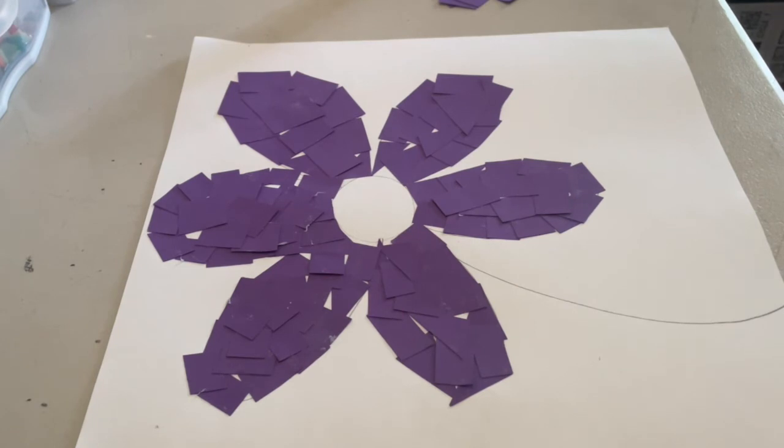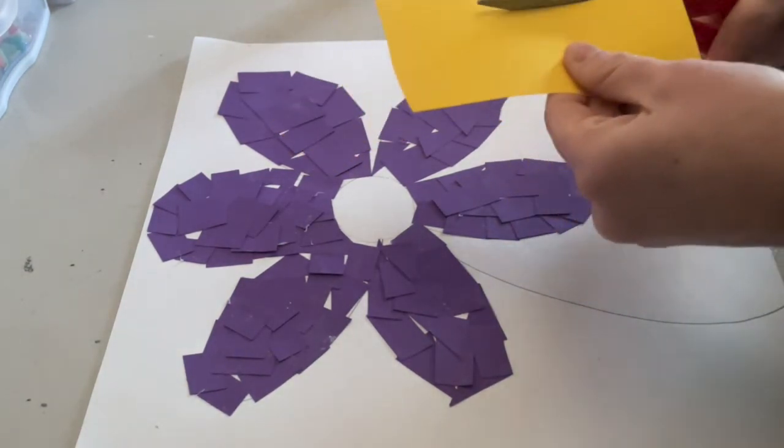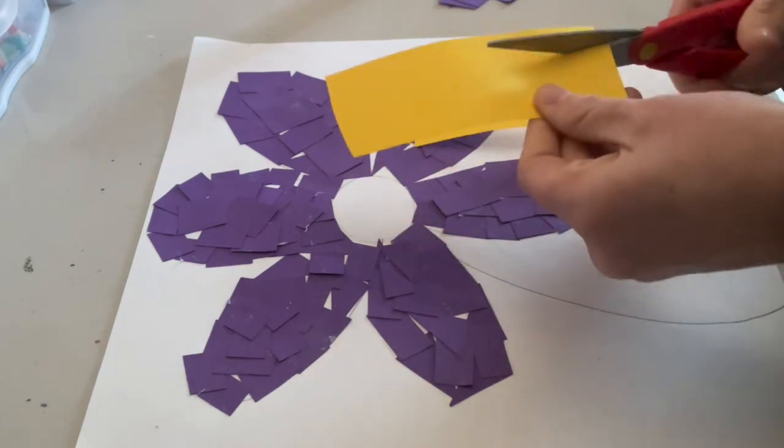Once you've finished the petals, you're going to choose another color to cut some small pieces for the middle of our flower. You can use any color, and remember if you don't have construction paper, just color another sheet of paper and do the same thing.